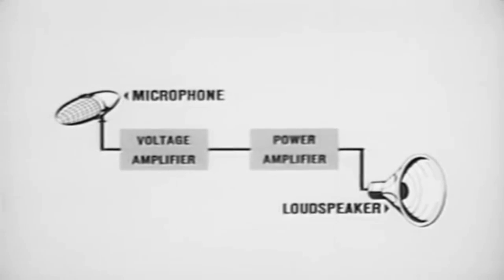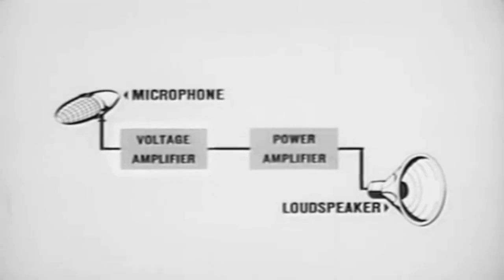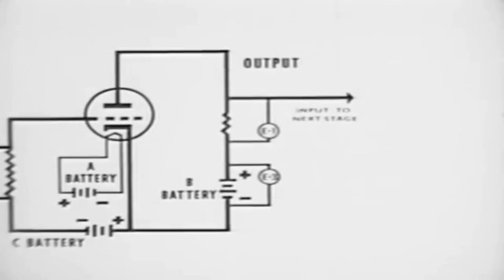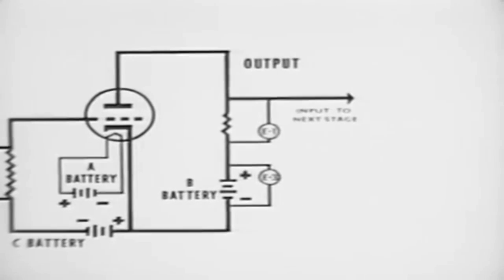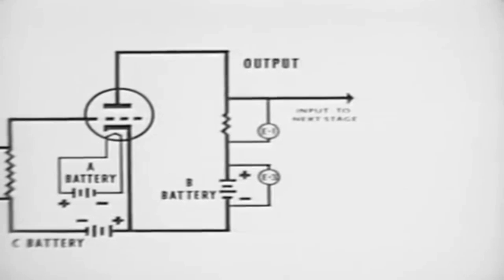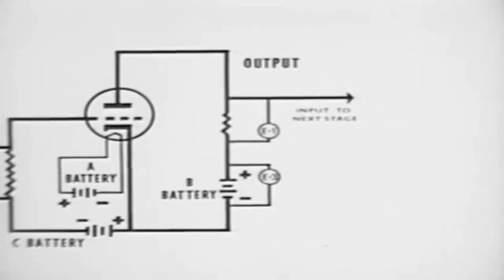Amplifiers are also classified according to type of service, whether they are to be used as a voltage amplifier or a power amplifier. Most circuits contain several voltage amplifiers and one power amplifier, however there are exceptions, especially in radio transmitters. A voltage amplifier is designed primarily to deliver a large varying output voltage to its load circuit. In order to accomplish this, there must be a relatively high value of load impedance.